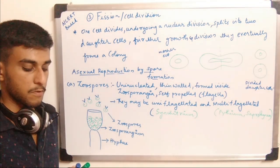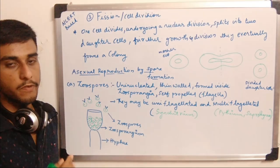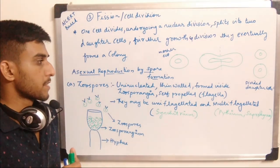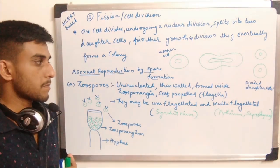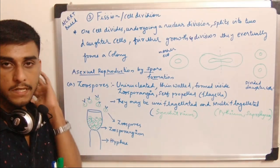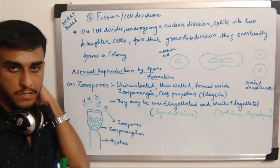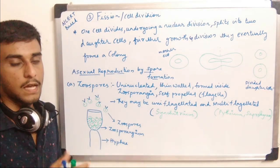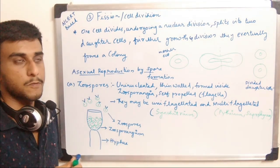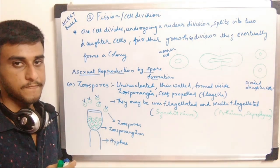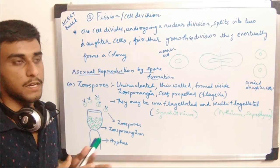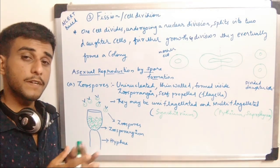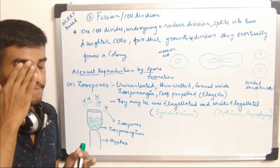Asexual reproduction by spore formation is the next method. There are many types of spores: zoospores, sporangiospores or aplanospores, conidia formation, and uredospores or teleutospores. These are the different types of spores produced by fungi.